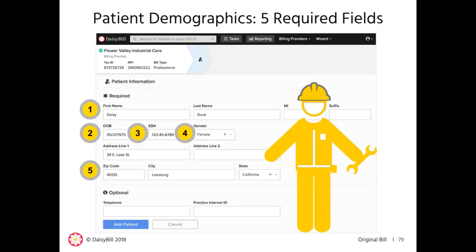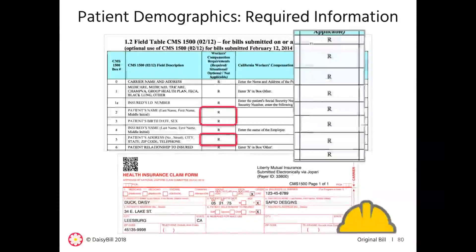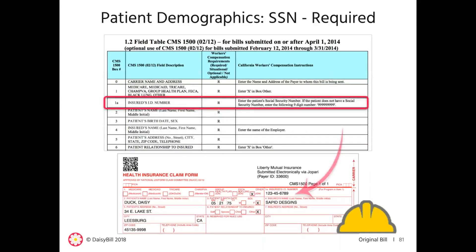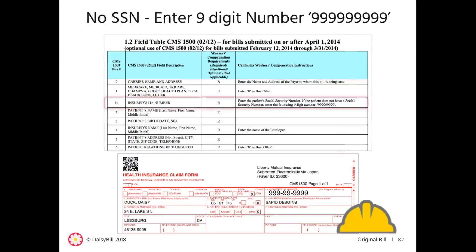The DWC requires five patient demographics: patient name, gender, date of birth, social security number, and patient address. In the DWC guide appendix, an 'R' means the information is required. When filling out the CMS-1500, the DWC requires the injured worker's social security number in box 1A. The injured worker's social security number is required when submitting a workers' comp bill. If the injured worker does not have a social security number, the guide instructs you to complete this box with nine nines — only when the patient genuinely does not possess one, not when you simply don't know it.